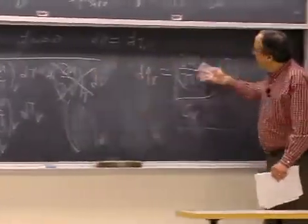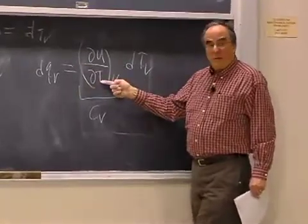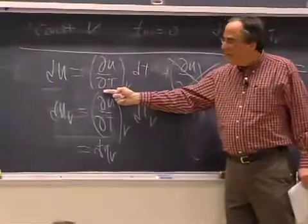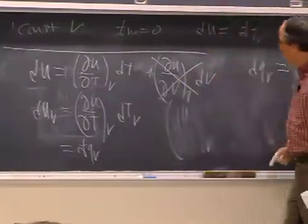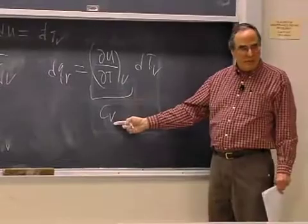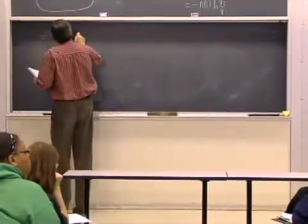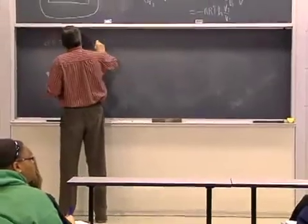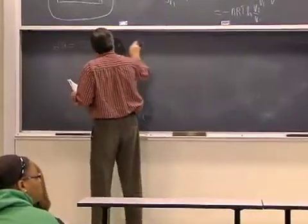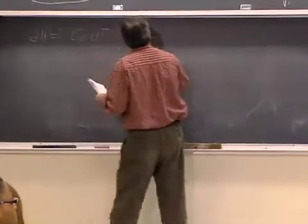We have discovered that this partial derivative that appears in the abstract definition of the differential for internal energy is just equal to cv. So du equals cv dt plus partial of u with respect to volume at constant temperature dv.